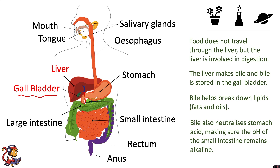Food in the stomach would have been mixed with hydrochloric acid, and as that food travels down you don't want that acid to be taken into the small intestines because the conditions in here are alkaline. So the bile being added not only helps break down lipids but it also helps to neutralize that stomach acid.